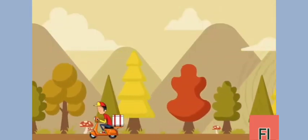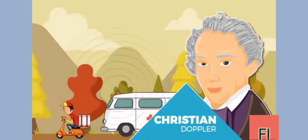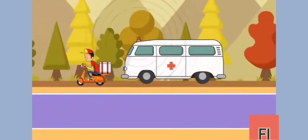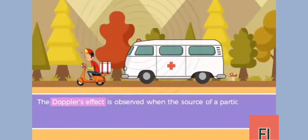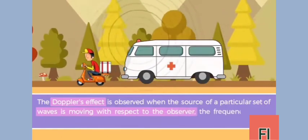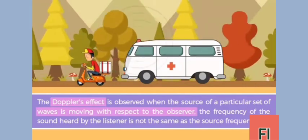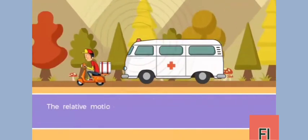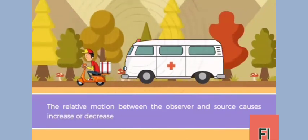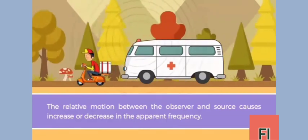Like many other phenomena, Doppler's effect is named after a scientist, Christian Doppler, who is credited with its discovery. Doppler's effect is observed when the source of a particular set of waves is moving with respect to the observer. The frequency of the sound heard by the listener is not the same as the source frequency. The relative motion between the observer and the source causes an increase or decrease in the apparent frequency. Let us try to understand different cases of Doppler's effect.